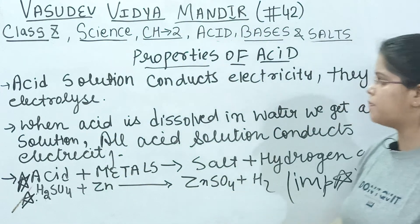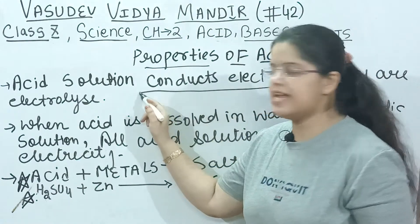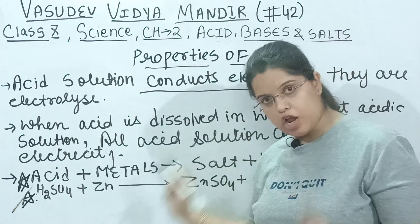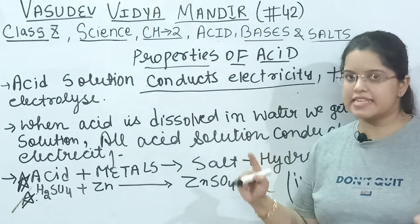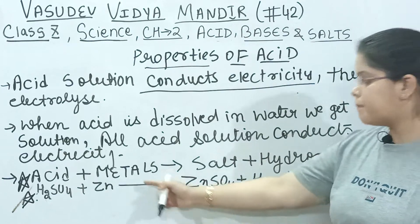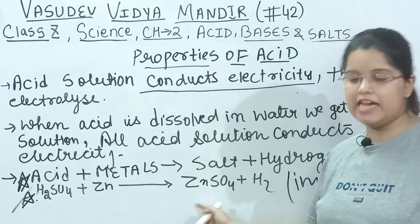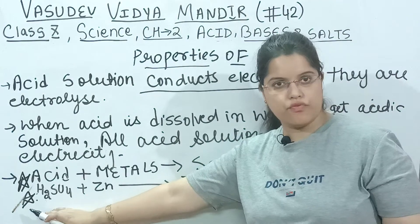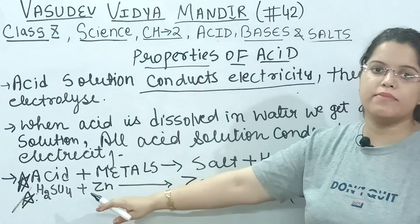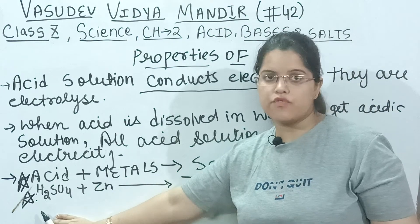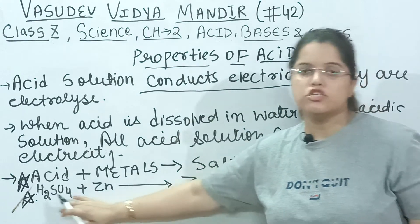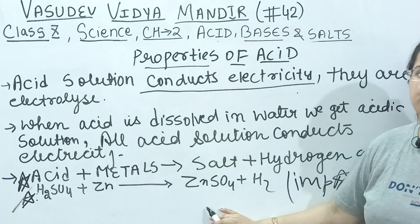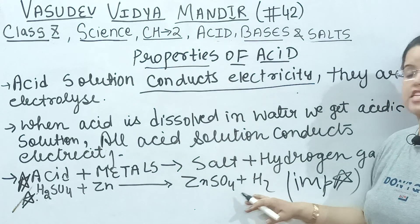So the properties of acid are: first, when acid is dissolved in water, electricity conducts. Second, if acid reacts with metal, salt is formed and hydrogen gas evolves. For example, H2SO4 (sulfuric acid) reacts with zinc metal. H2SO4 is the acid and zinc is the metal. The salt formed is zinc sulfate, and hydrogen gas is evolved.